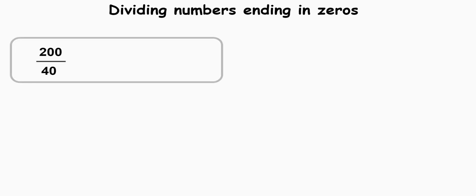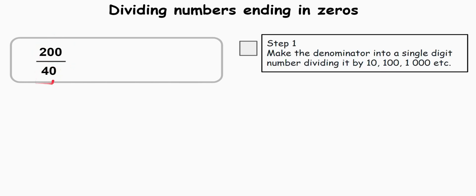Our first problem is 200 divided by 40. I'm going to show you three steps to make problems like these easier to solve. The first step: we need to make the denominator — that's 40, also known as our divisor — into a single-digit number. To make 40 into a single-digit number, we need to divide it by 10. 40 divided by 10 equals 4. We've completed our first step by making 40 into a single-digit number.